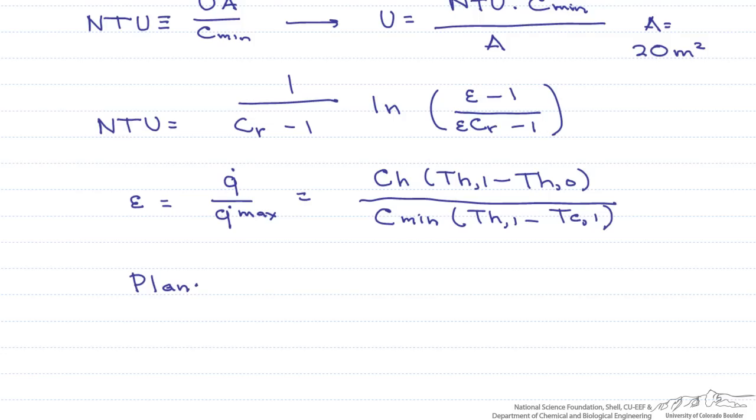Our plan is as follows. First, we need to find all of these heat capacity rates, determine which one is minimum, and find the ratio.